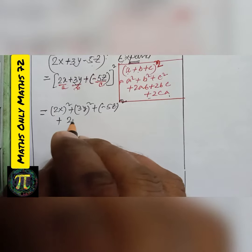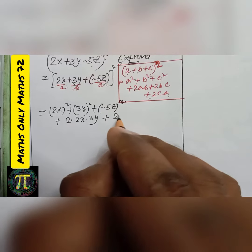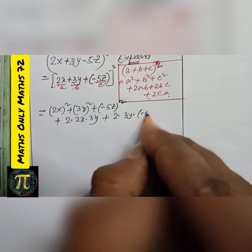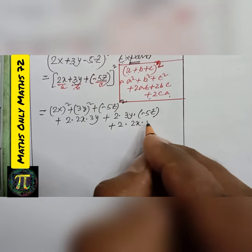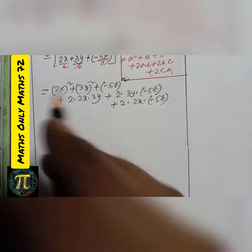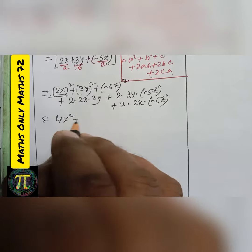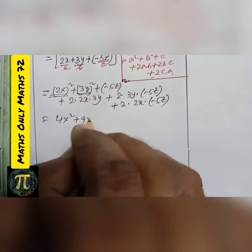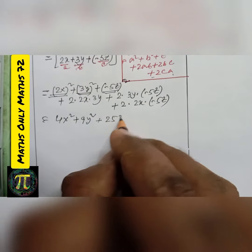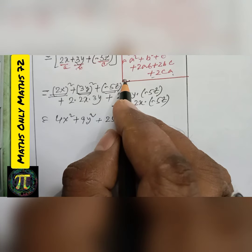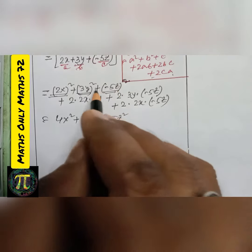So substituting: a square is 4x square, b square is 9y square, c square is (−5z) whole square which is 25z square, plus 2ab is 12xy, plus 2bc, plus 2ca.